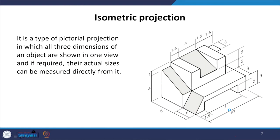So what is an isometric projection? It is a type of pictorial projection in which all three dimensions of an object are shown in one single view, and if required their actual sizes can also be measured directly from it. As just explained, it is not just a pictorial representation — there is a possibility of measuring dimensions directly from the object drawn in isometric projection.